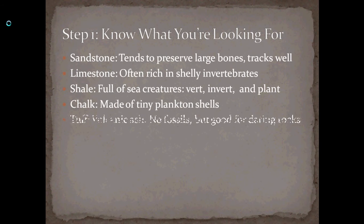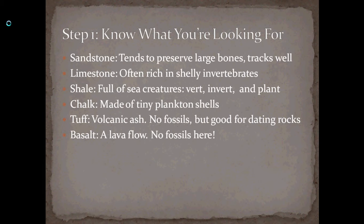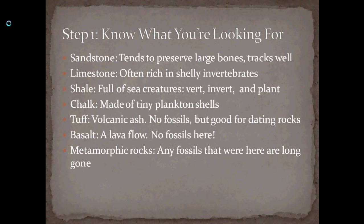Chalks are made up of tiny plankton shells. Tuffs are a volcanic ash that's really good for dating the rocks, even though they have no fossils in them. Basalts are going to have no fossils at all because they're a lava flow — so anything caught in that would have been incinerated; there's nothing left. Metamorphic rocks in theory could have fossils, as many metamorphics are derived from sedimentary rocks, but because of the high pressures and temperatures under which metamorphic rocks form, any fossils that were there are long since gone.